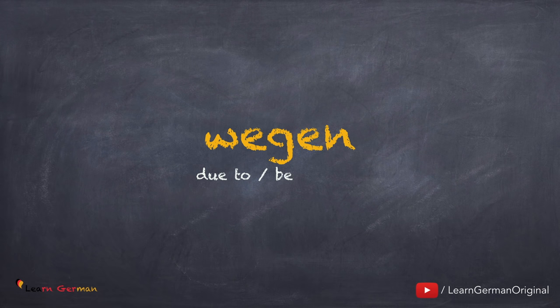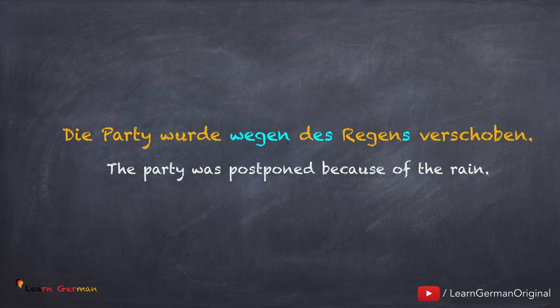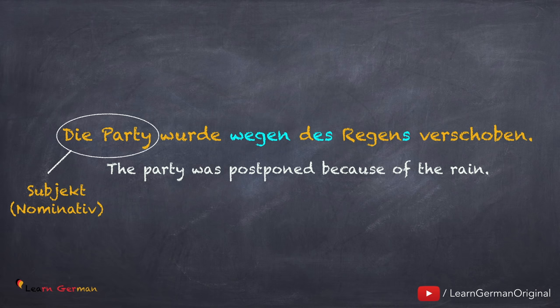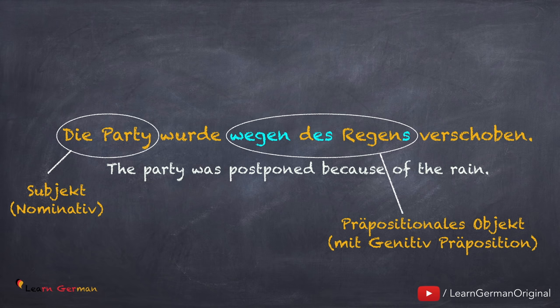Jetzt schauen wir uns die erste Präposition an: Wegen. Wegen beantwortet die Frage 'Warum?', genauso wie die Konjunktion 'Weil'. Hier ist der erste Satz: Die Party wurde wegen des Regens verschoben. Die Party ist Nominativ-Subjekt und 'wegen des Regens' ist präpositionales Objekt mit der Genitiv-Präposition 'wegen'. Weil 'wegen' eine Genitiv-Präposition ist, schreiben wir statt 'der Regen' → 'des Regens'.